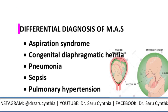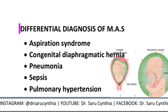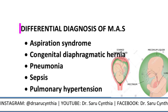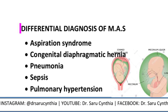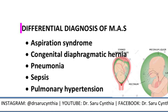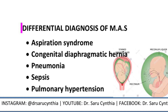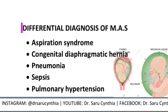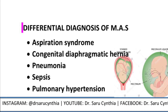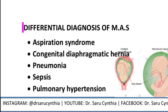Differential diagnosis of MAS includes: one, aspiration syndrome; two, congenital diaphragmatic hernia; three, pneumonia; four, sepsis; five, pulmonary hypertension. I found more than this for differential diagnosis, but I'd like to give you a task — comment some of the other differential diagnoses below so that you can get interactive.